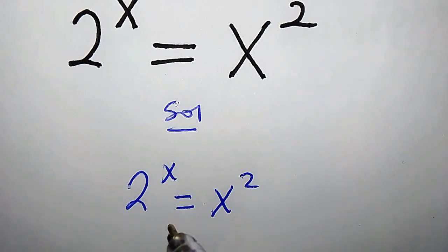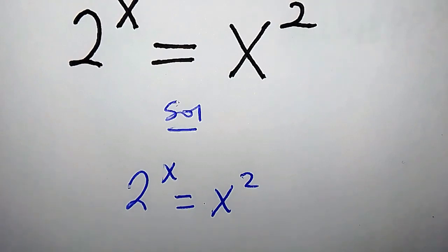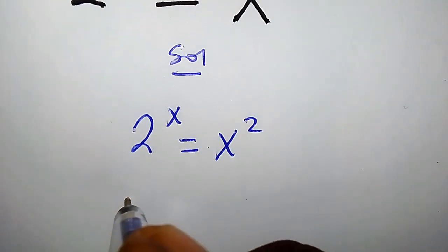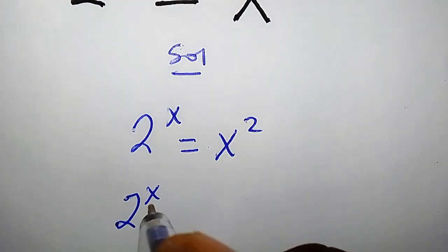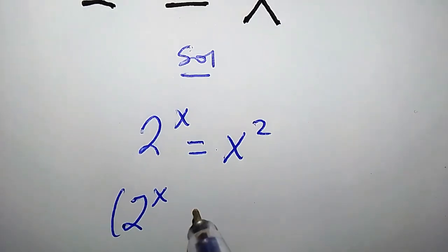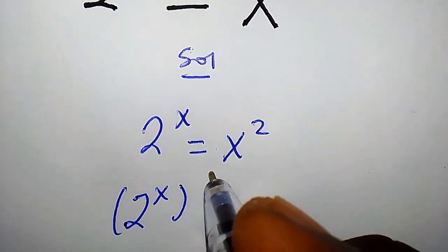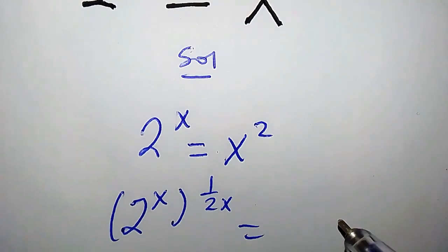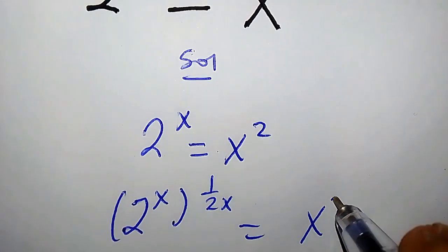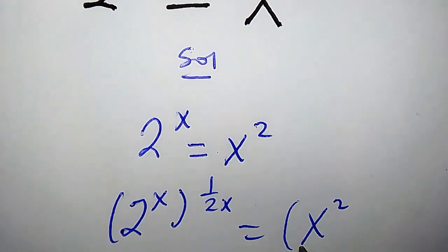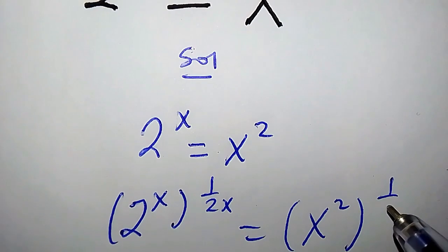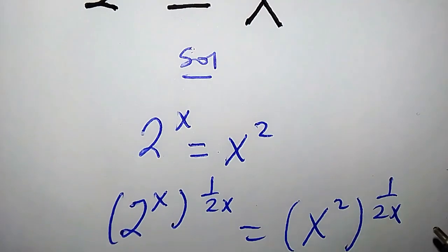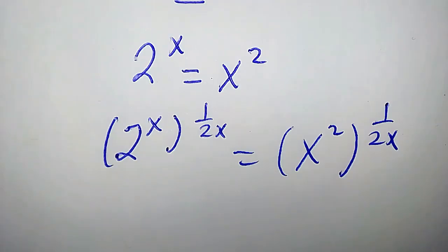The trick here is that we are going to multiply both powers by 1 over 2x. So we're going to have 2 to the power of x times 1 over 2x equals x squared times 1 over 2x.